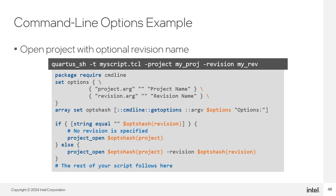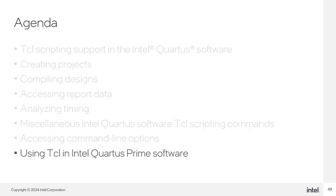The first command loads the required command_line package. The setOptions statement describes the options — in this case, project and revision, both with .arg specifying they require an argument value. Empty double quotes indicate no default values. After setOptions, the array set opsHash command calls getOptions to process command line options and fills the opsHash array. The if statement determines whether the caller specified a revision — with no revision, project_open only uses the project name; if a revision name is specified, the script opens the project with the specified revision.